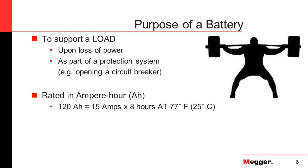Battery manufacturers also provide that specification. One thing to point out is that this is not a linear function. So I can't take half the time, say four hours, and get 30 amps — it doesn't work that way. The amps actually proportionally decrease when I decrease the amount of time.